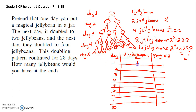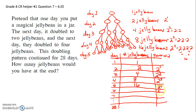On day one there was just one jelly bean — that's two to the zero power, and any number to the zero power is one. Day two, we were up to two jelly beans — that's two to the first power. Day three, four jelly beans — that's two to the second power. Day four, eight jelly beans — two to the third power. Day five, sixteen jelly beans — two to the fourth power. Hopefully you can see this pattern: the next day would be two to the fifth power.